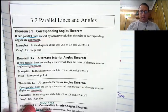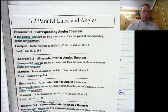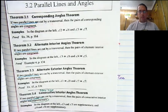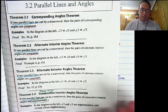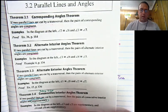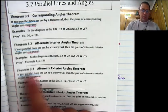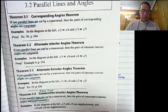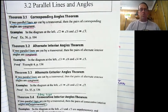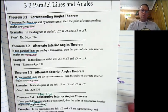Now, in the previous lesson we talked about all these angle theorems: corresponding angles, alternate interior angles, alternate exterior, same side interior, same side exterior, all of those. And we noticed that for each one of these theorems, they all start the same way — if two lines are parallel. In all of these, you have to already know that your lines are parallel.